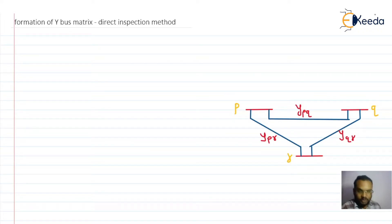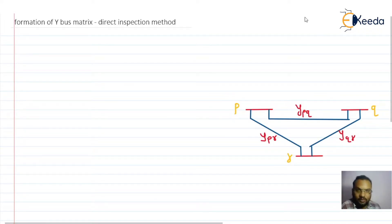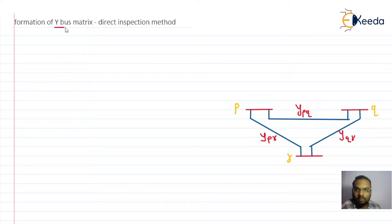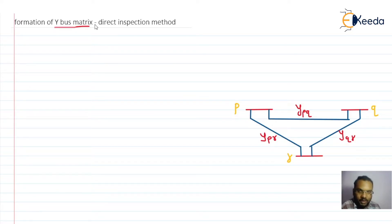In the last lecture we have seen how to formulate the admittance matrix, or what we can call the bus admittance matrix, of a given power system. Now we will be discussing the different methods of obtaining the YBUS matrix.